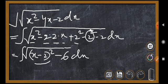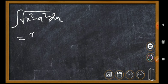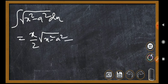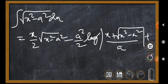There is a standard formula for integration of the form √(x² - a²) dx. The formula is: x/2 · √(x² - a²) minus a²/2 · log of (x + √(x² - a²)) plus C.